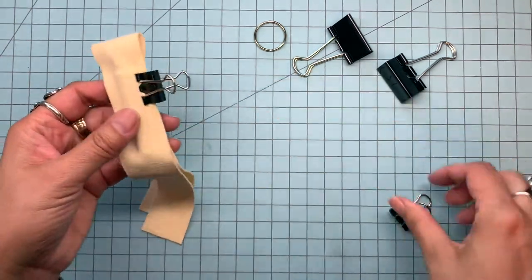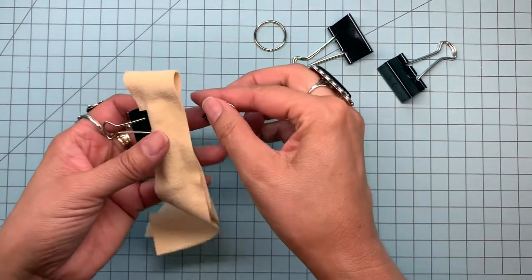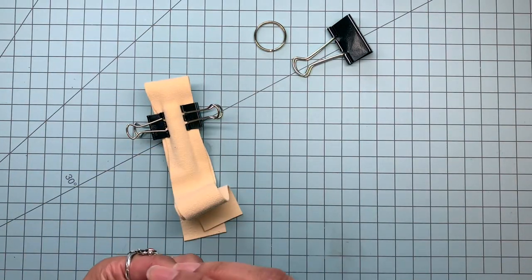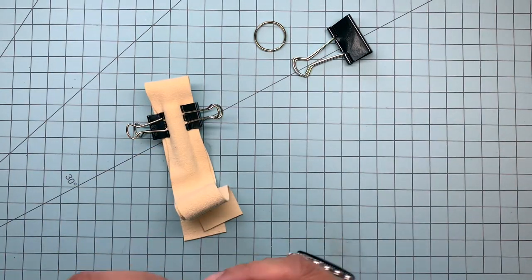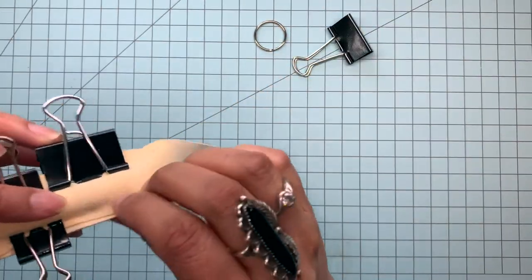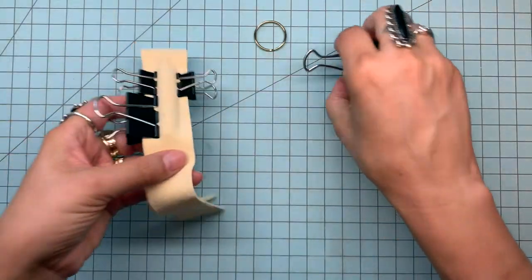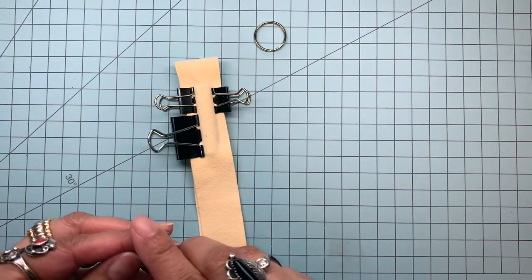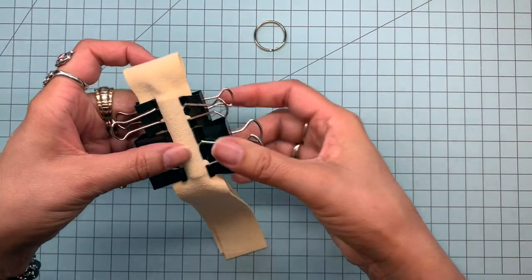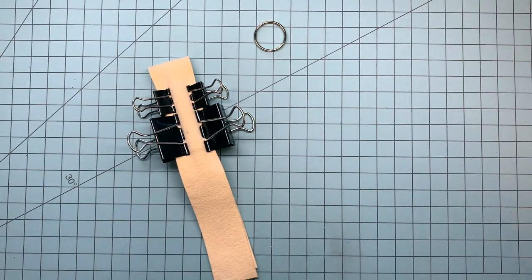Then you can use these clips to pull it tight while it dries. It also pulls a really nice edge on your key chain. So we do that, and we'll let it dry for a minute, and then we'll come back.